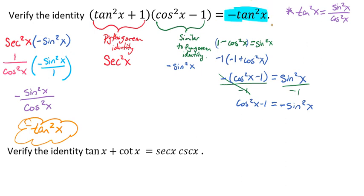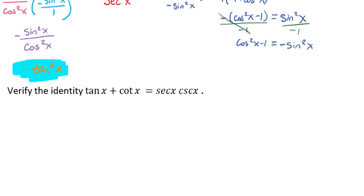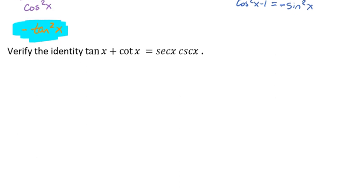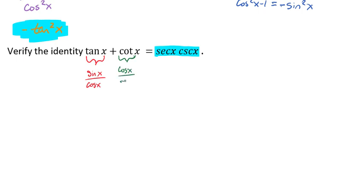We have verified the identity and we are now finished. Let's take a look at another one. Here we're going to verify the identity: the tangent of x plus the cotangent of x equals the secant of x times the cosecant of x. Our left side looks a little bit more complicated, so we're going to choose the left side to try to make it equal the right-hand side. Tangent can be written as sine of x over cosine of x, and cotangent can be written as cosine of x over sine of x.